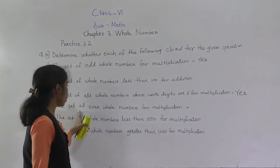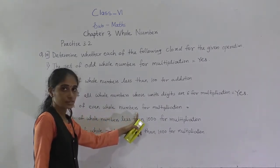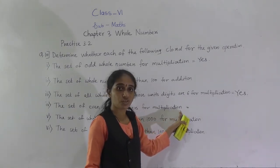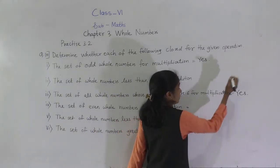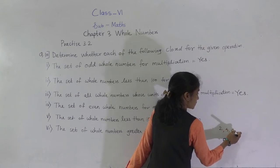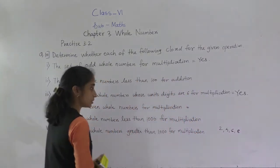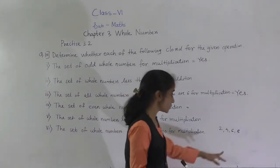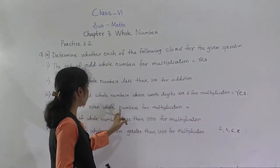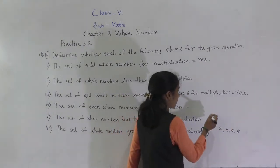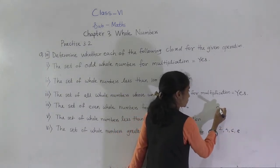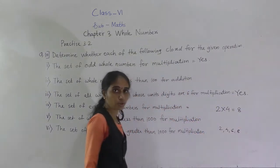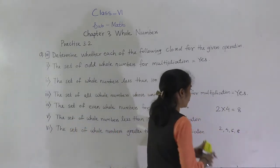Now, the set of even whole numbers for multiplication. Which are the even numbers? 0, 2, 4, 6, 8 — numbers with these digits in the ones place are called even numbers. Take 2 into 4: you are getting 8, again a whole number and that is an even whole number. So it is closed for the given operation.